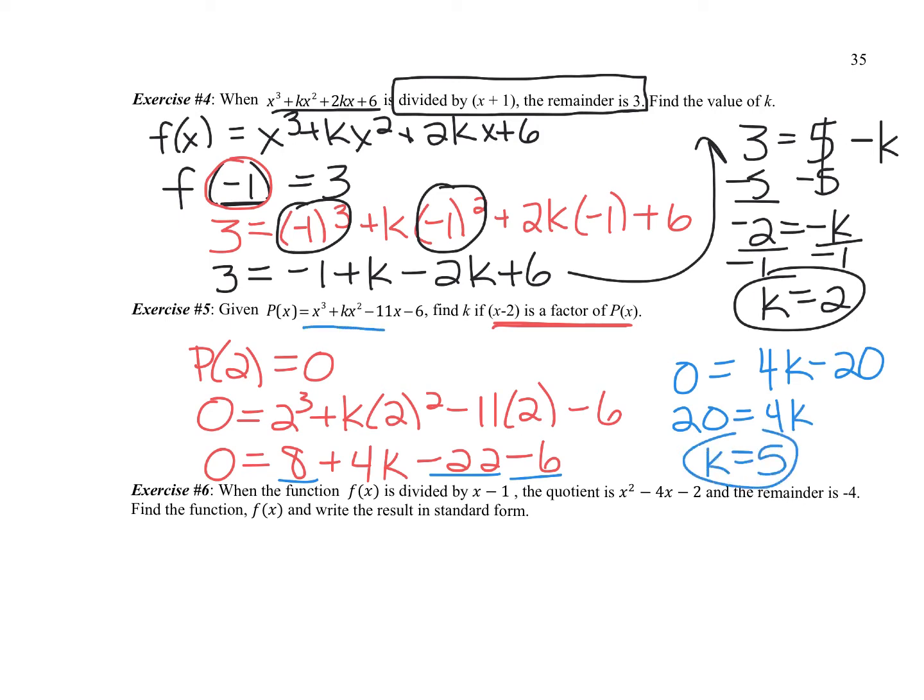So moving back over, basically x cubed plus 5x squared minus 11x minus 6 has a factor of x minus 2.